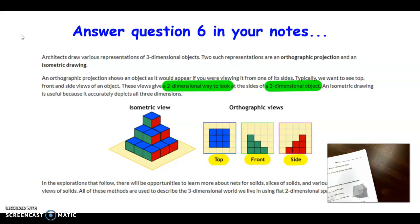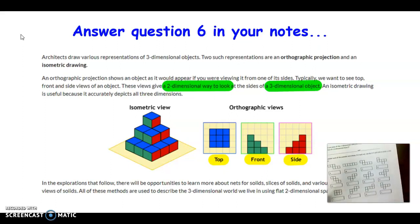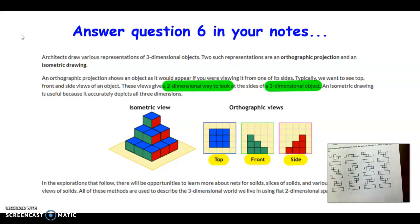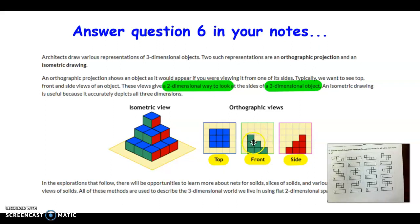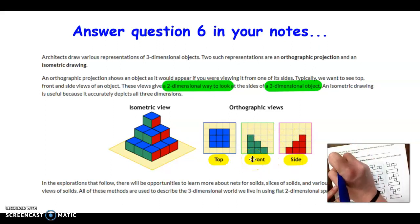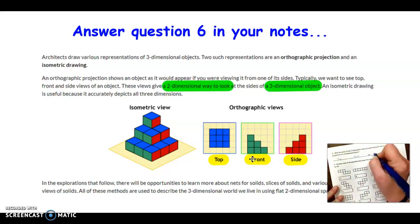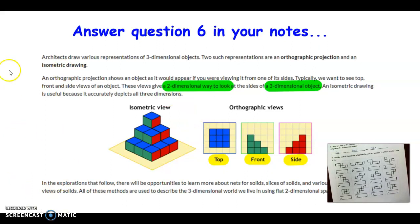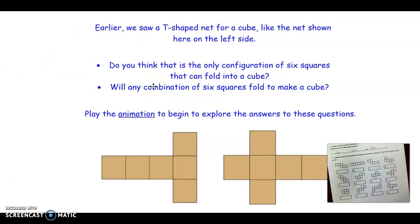So it says architects draw various representations of three-dimensional objects. And two of these representations are called orthographic and isometric drawings. So the orthographic is here what you see on the right. This is a top, front, and side view of a three-dimensional object. The isometric view kind of lets you see it kind of appear like a 3D object. So this is isometric and this is orthographic. So those are different ways of looking at three-dimensional objects in a two-dimensional view. It says on your notes what are some of the two-dimensional views you could represent with an orthographic projection of a three-dimensional object. And those are highlighted here, top, front, and side. Those are the typical views that are given in an orthographic view.